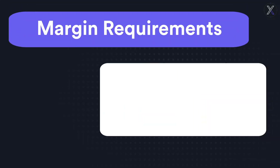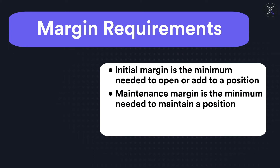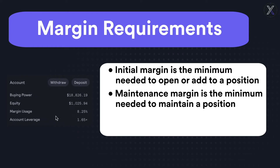The required collateral to open or add to a position is determined by a market's initial margin. You won't be able to open a new position or add to an existing one if this would cause your total equity to drop below the initial margin requirement. The collateral required to avoid liquidation is determined by a market's maintenance margin. If your equity ever falls below the maintenance margin requirement, your positions may be automatically closed. Your account's total margin requirement is equal to the sum of your margin requirements for each market in which you're invested.